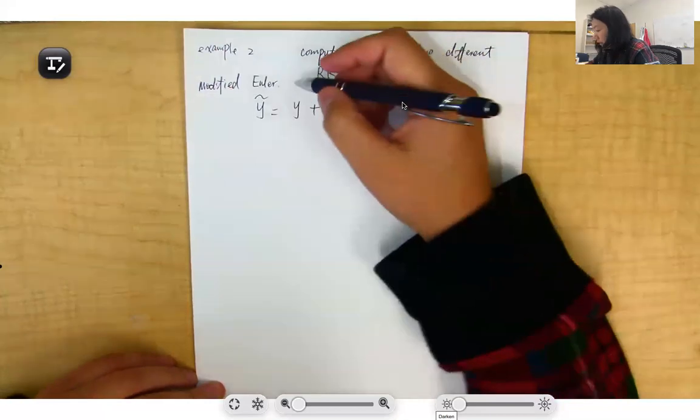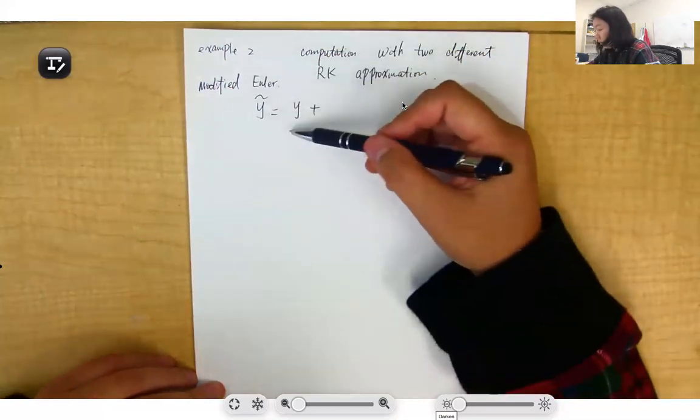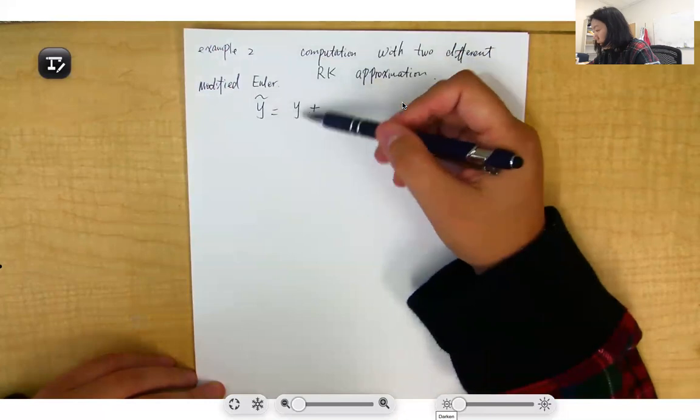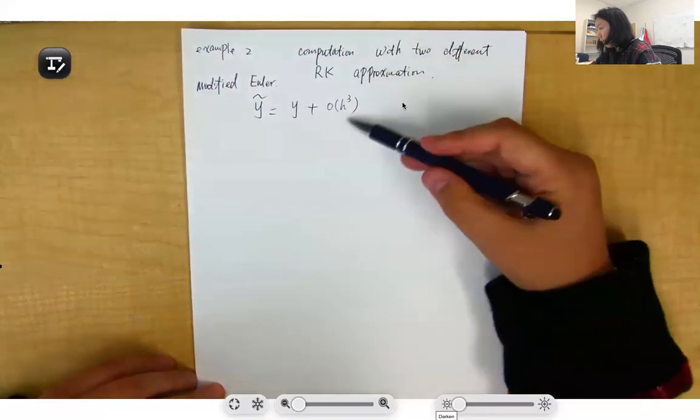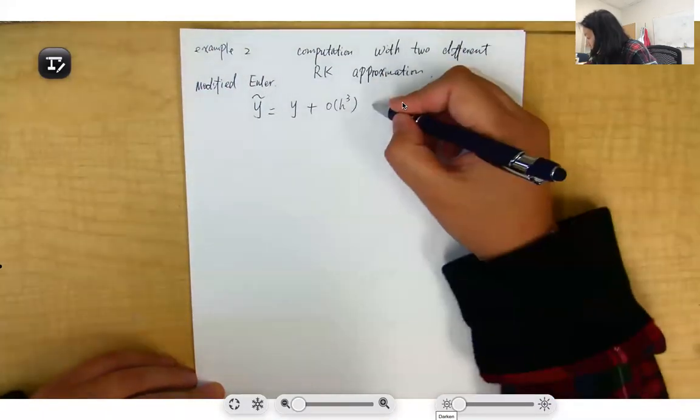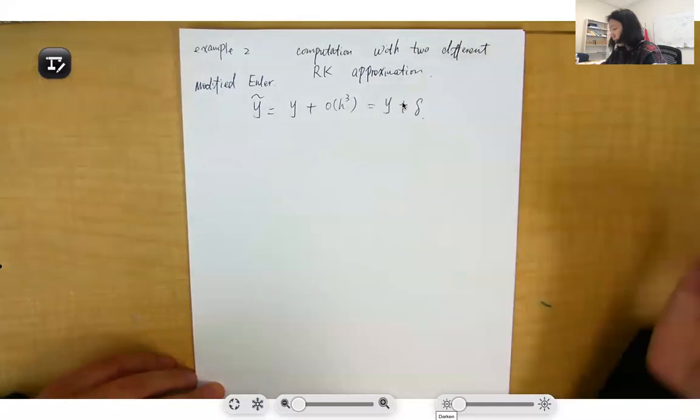Modified Euler is second order Runge-Kutta, so the true value equals the derived value plus O(h^3). That is the truncation error, which equals y + σ.